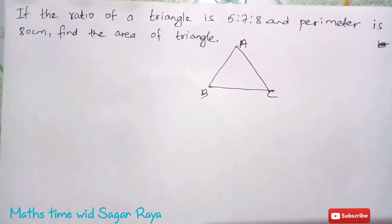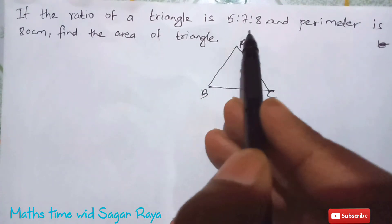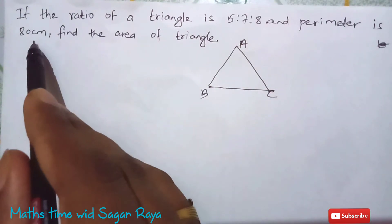Let's move through the question. In the screen you can see the question: if the ratio of triangle is 5 is to 7 is to 8 and perimeter is 80 cm, find the area of triangle.